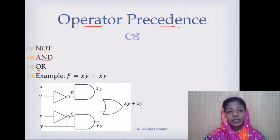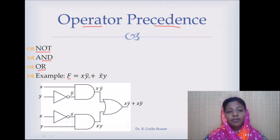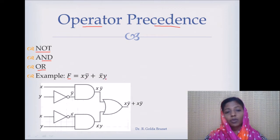For example, F is a Boolean function which is an XOR function. So we have XY̅ plus X̅Y. Here we have two complements: Y̅ is a NOT operation, X̅ is also a NOT operation, and then we have AND operations between X and Y̅, and X̅ and Y. And finally, we have an OR operator.